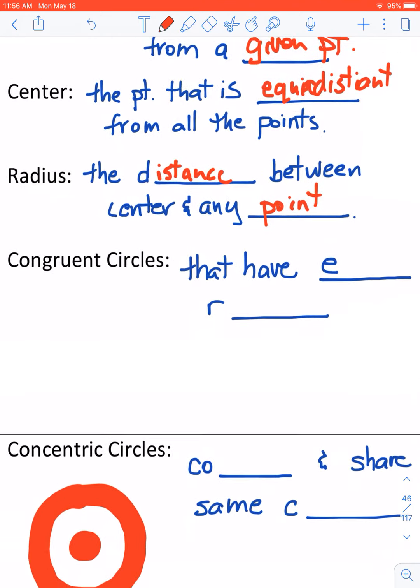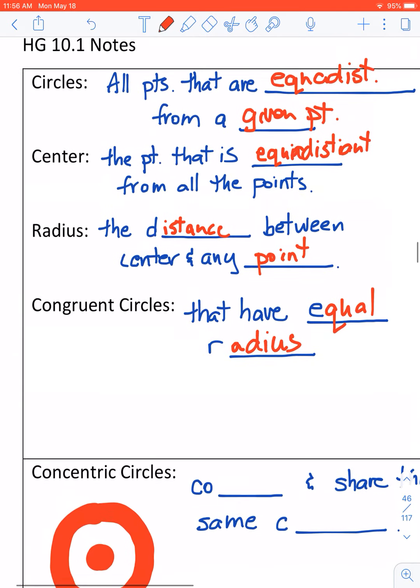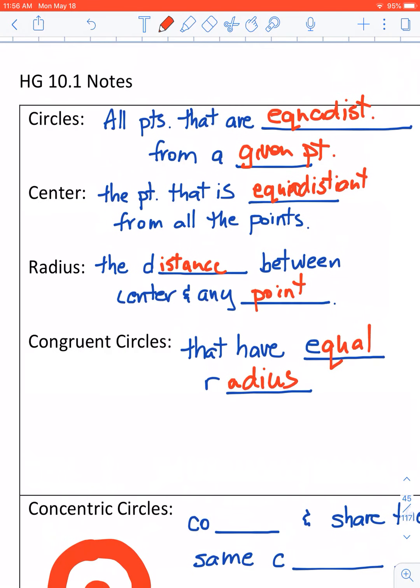Congruent circles, circles that have equal radiuses. So notice how we build. We start with the concept, all the points that are equidistant from a given point, and then we build out from there to what are these shapes.